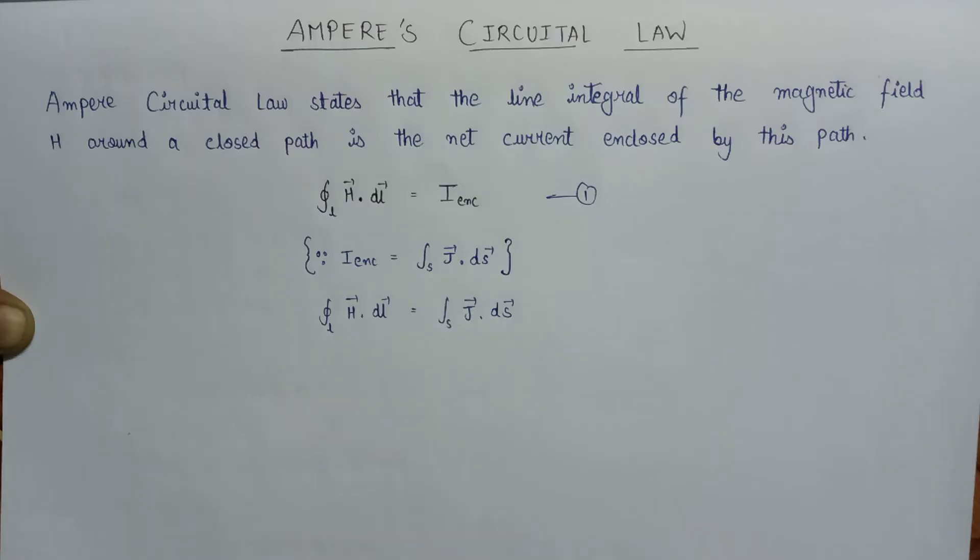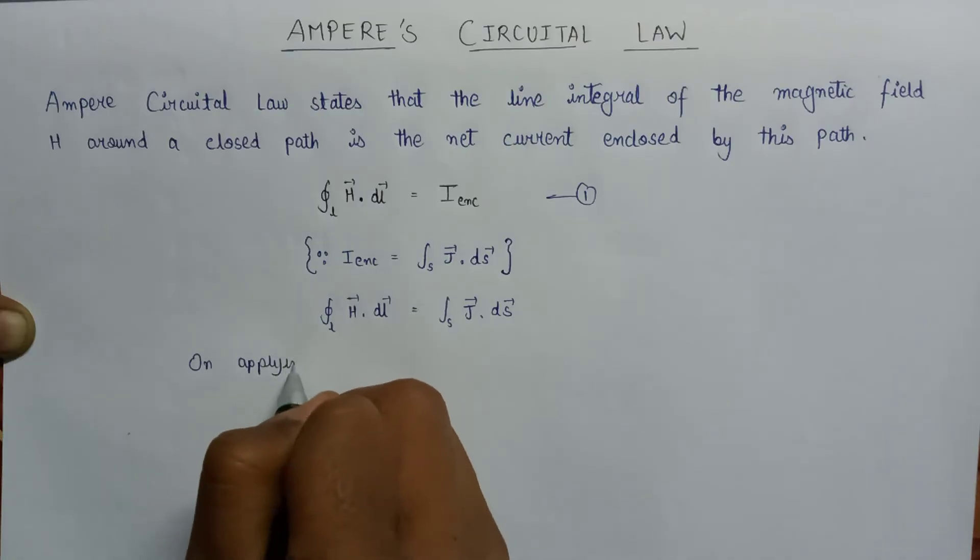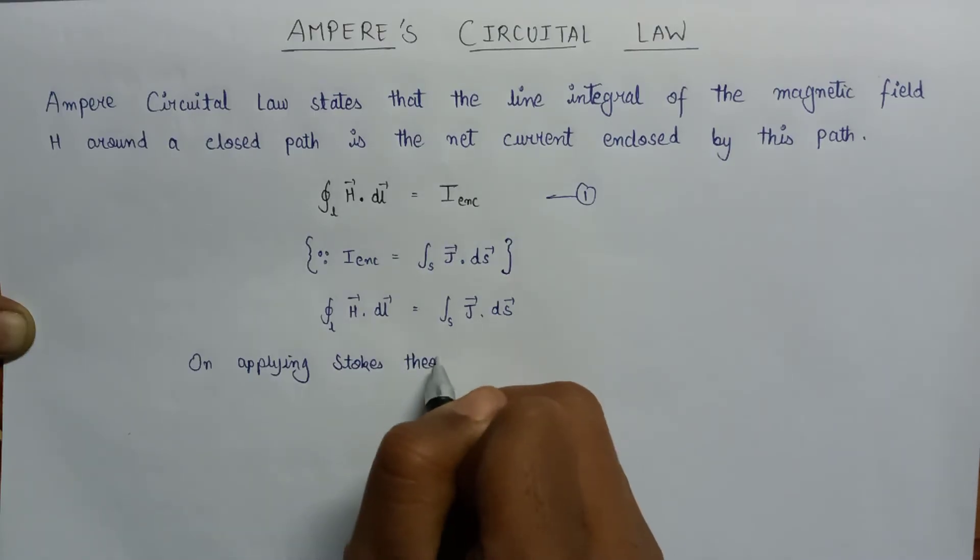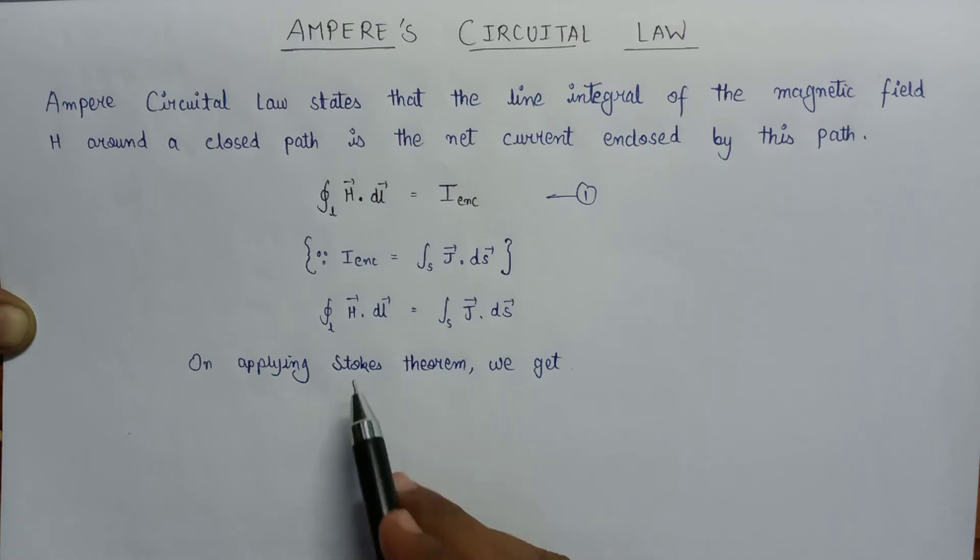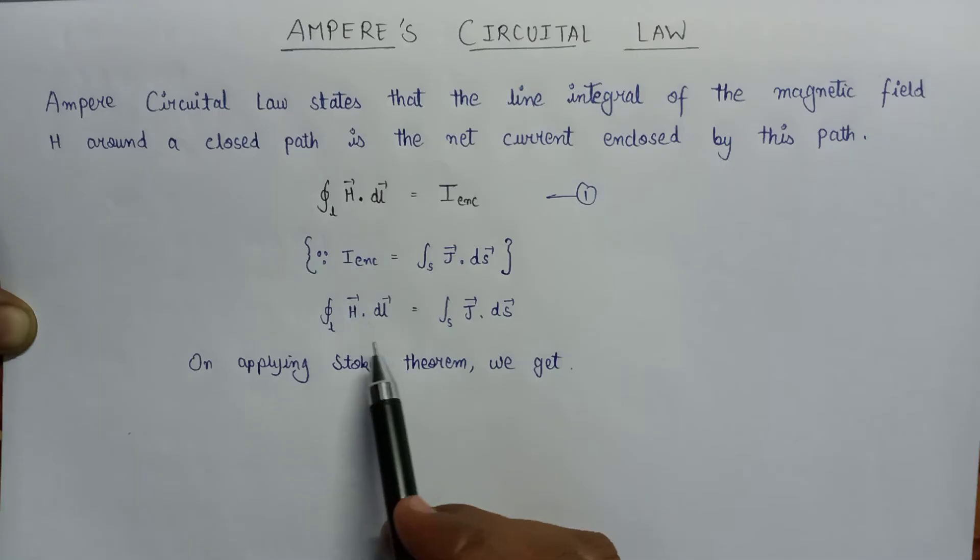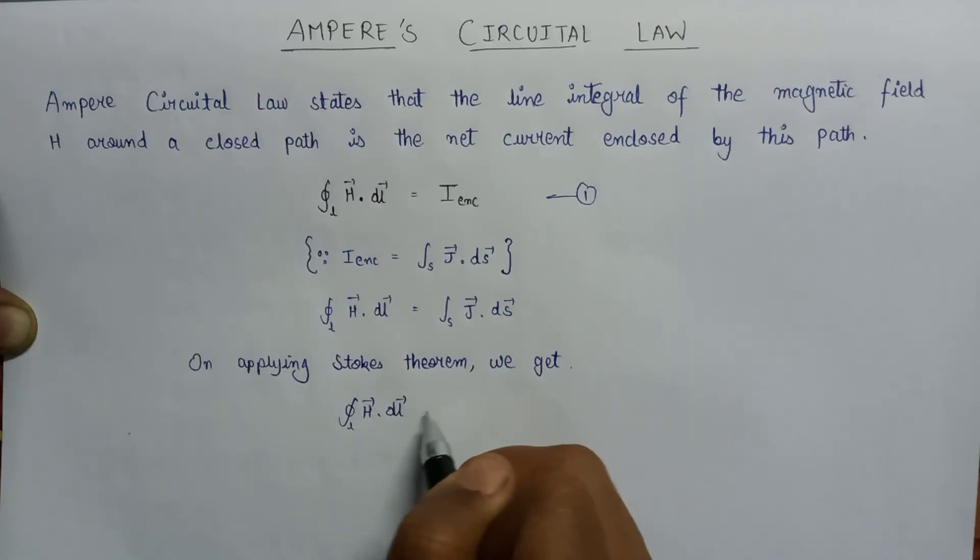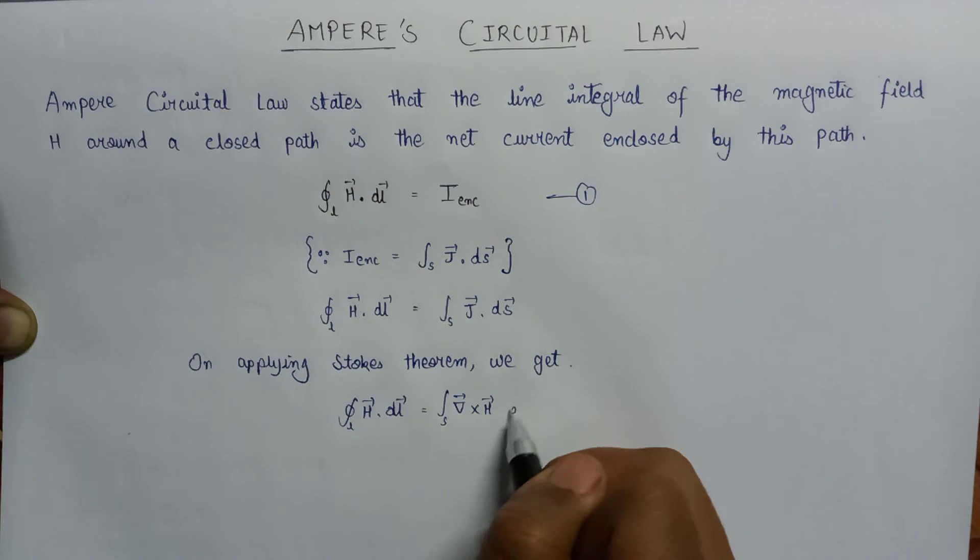Now on applying Stokes theorem, since Stokes theorem is used for the conversion of line integral into a surface integral, this line integral H dot dL can also be written as del cross H vector over a surface integral into dS.